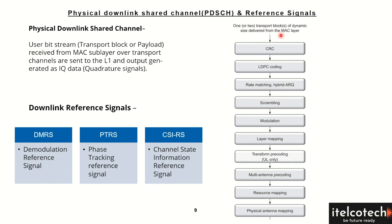These transport blocks, while passing on to the lower layers in the downlink, follow a series of proper processing steps. The very first step is a cyclic redundancy check. The transport block coming in is first checked for any errors. If any error is detected, LDPC codes will then identify and correct those particular errors.